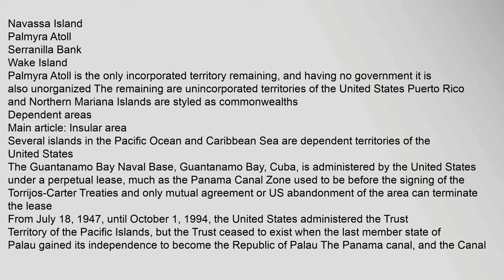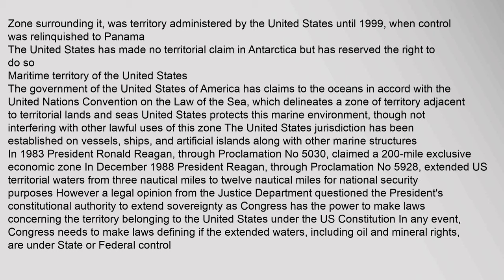Several islands in the Pacific Ocean and Caribbean Sea are dependent territories of the United States. The Guantanamo Bay Naval Base in Cuba is administered by the United States under a perpetual lease, much as the Panama Canal Zone used to be before the signing of the Torrijos-Carter Treaties; only mutual agreement or U.S. abandonment of the area can terminate the lease. From July 18, 1947 until October 1, 1994, the United States administered the Trust Territory of the Pacific Islands, but the trust ceased to exist when Palau gained its independence to become the Republic of Palau. The Panama Canal and the Canal Zone surrounding it was territory administered by the United States until 1999, when control was relinquished to Panama. The United States has made no territorial claim in Antarctica but has reserved the right to do so.